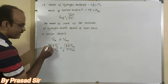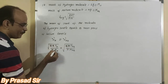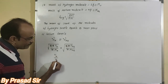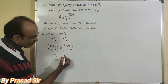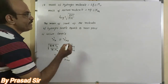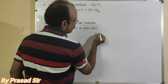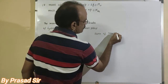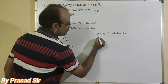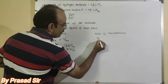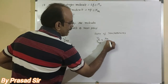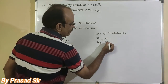In both sides, 8R and π cancel. Squaring both sides, we get: T_hydrogen / M_hydrogen = T_helium / M_helium. We want to find the ratio of temperatures, so T_hydrogen / T_helium = M_hydrogen / M_helium = 2 / 4.